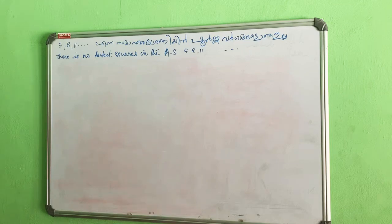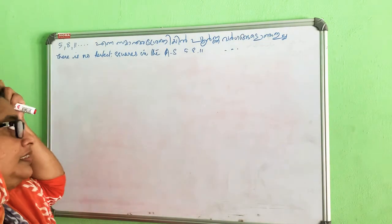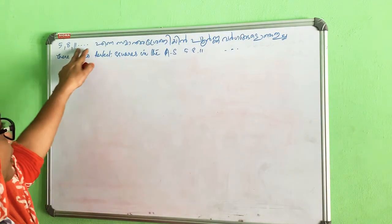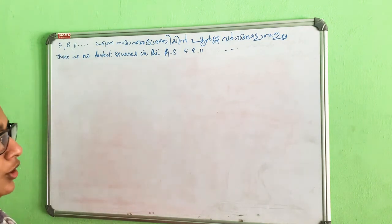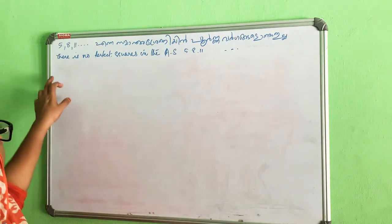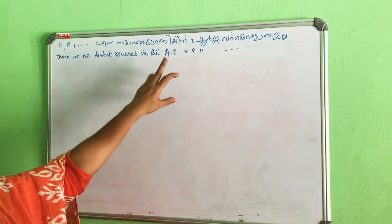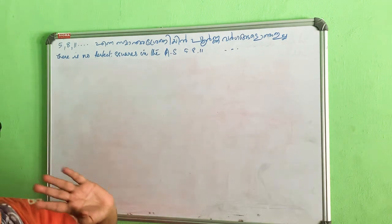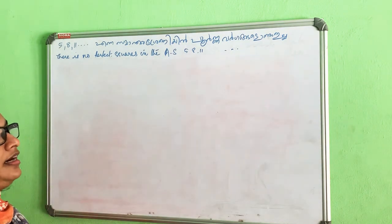Now, our question is: 5, 8, 11, etc. There is no perfect square in the arithmetic sequence 5, 8, 11, etc. That's what we have to prove.